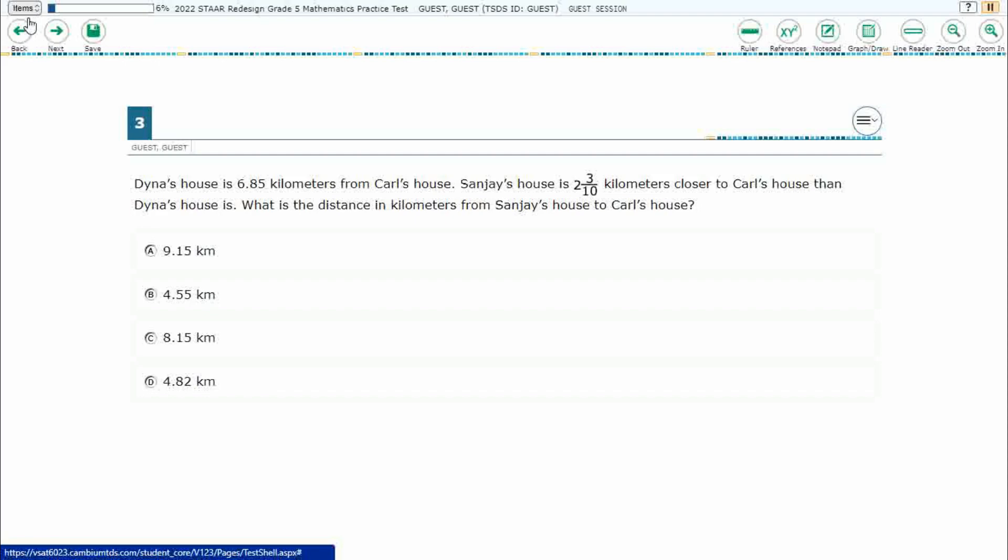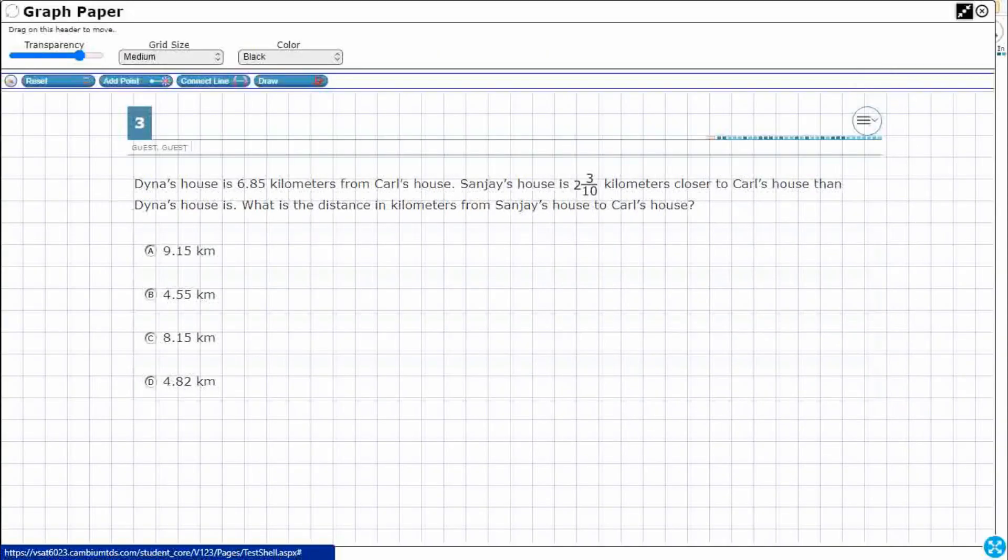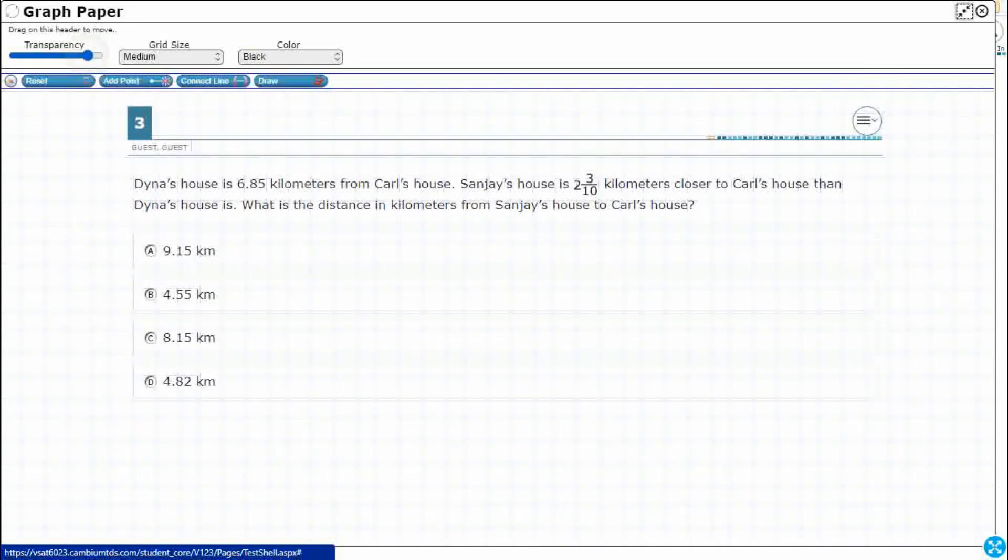Let's get our graph draw feature here and let's expand it out. There we go. Increase our transparency so we can see what's going on.